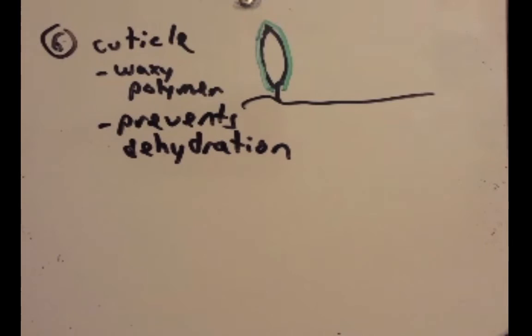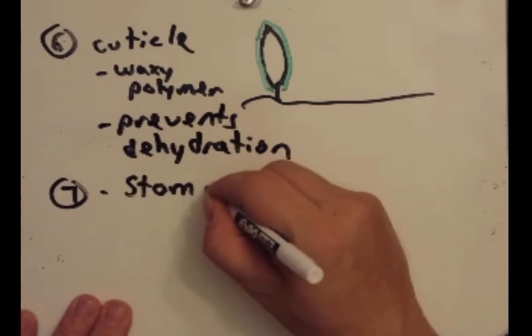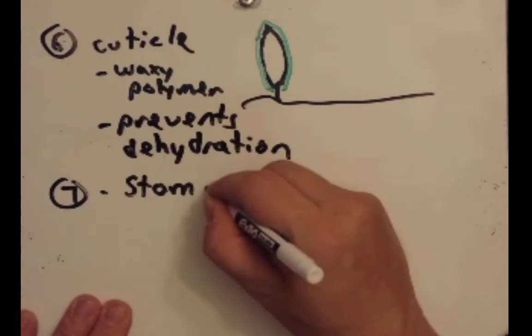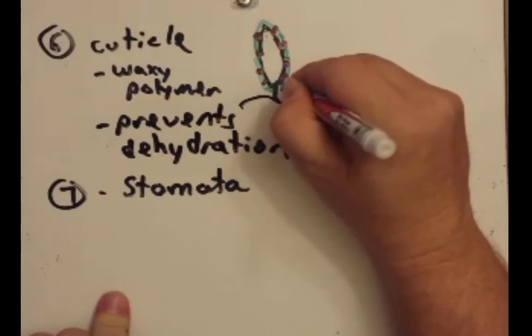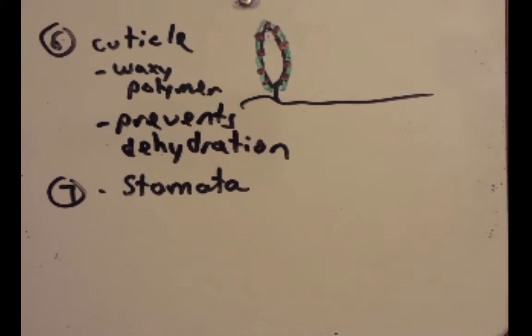Seventh here is the stomata. It's one of my favorite science words. Stomata, if we look up here at our plant, they are tiny pores. I'm not drawing them too tiny here because I want you to see them, but they're very small pores found in the plant, particularly in plants with leaves, the leaves.